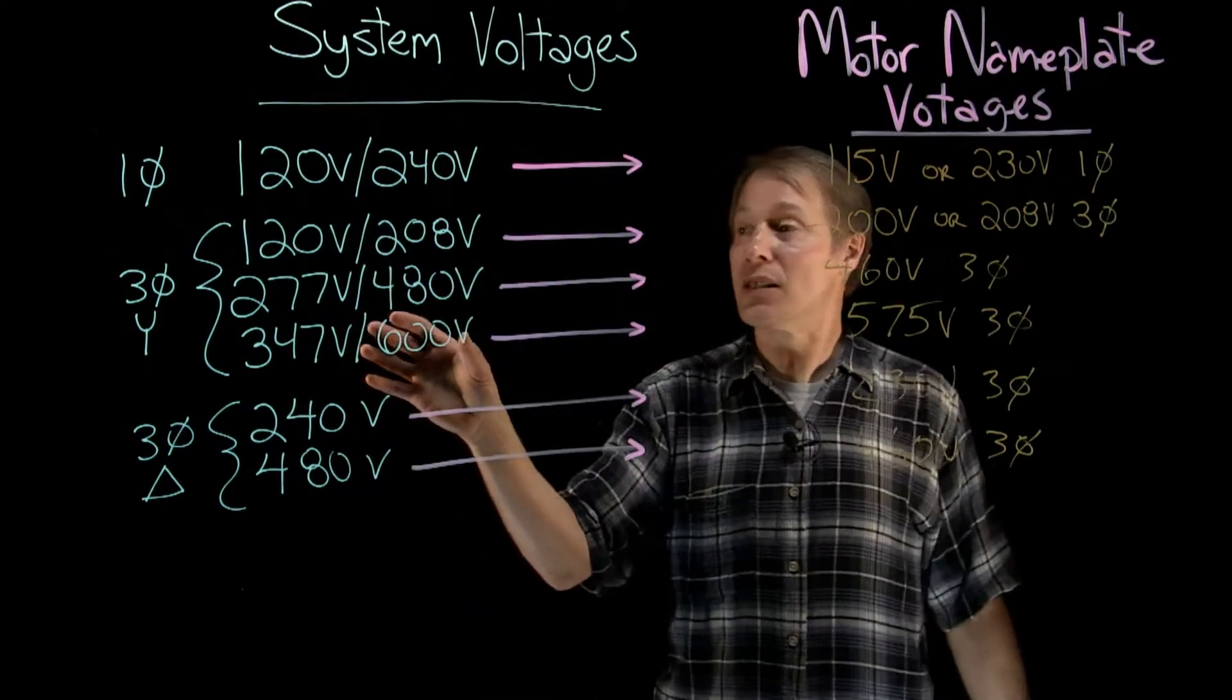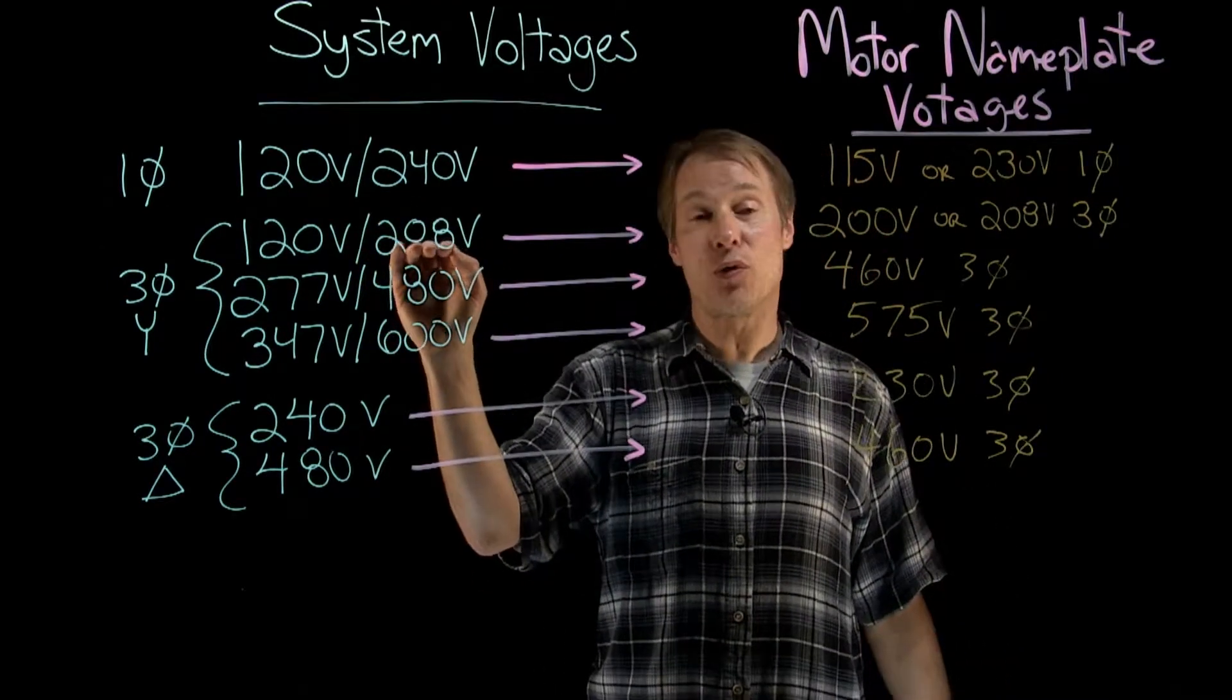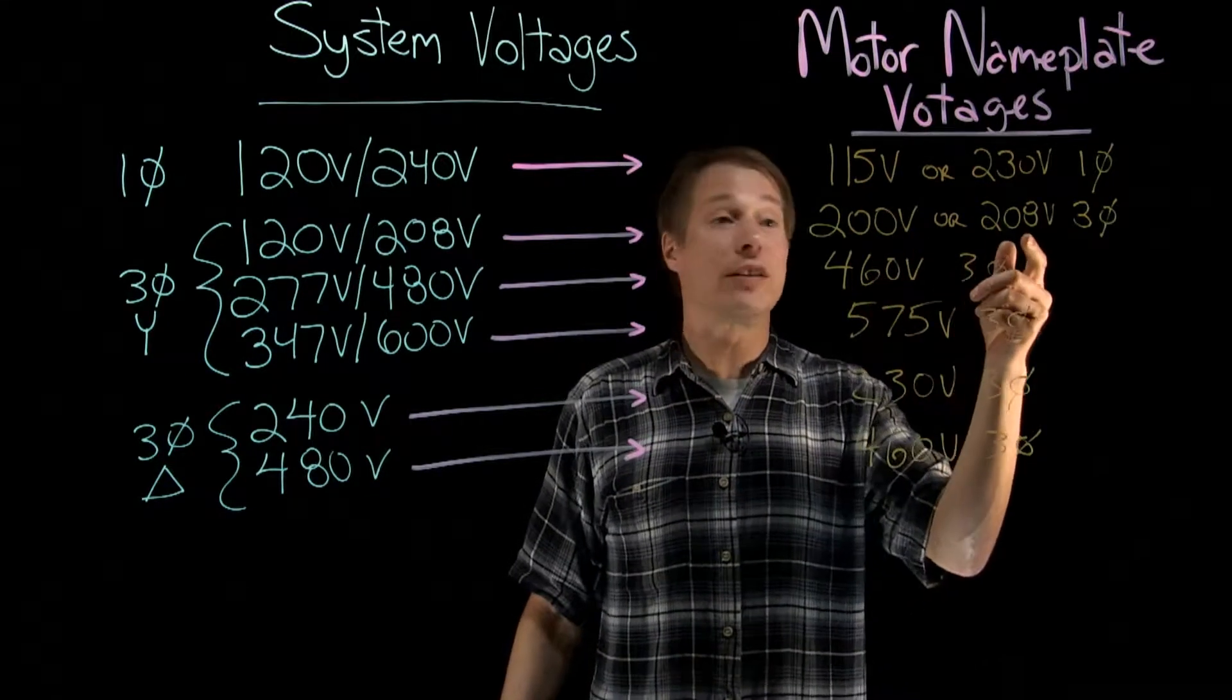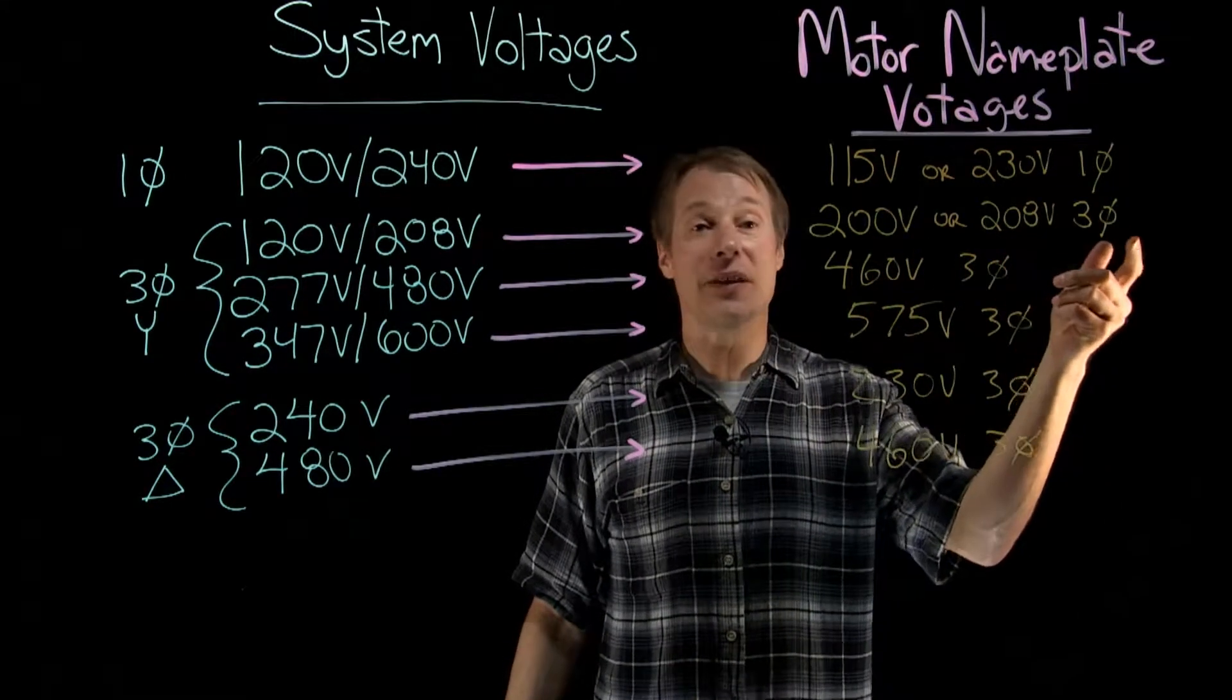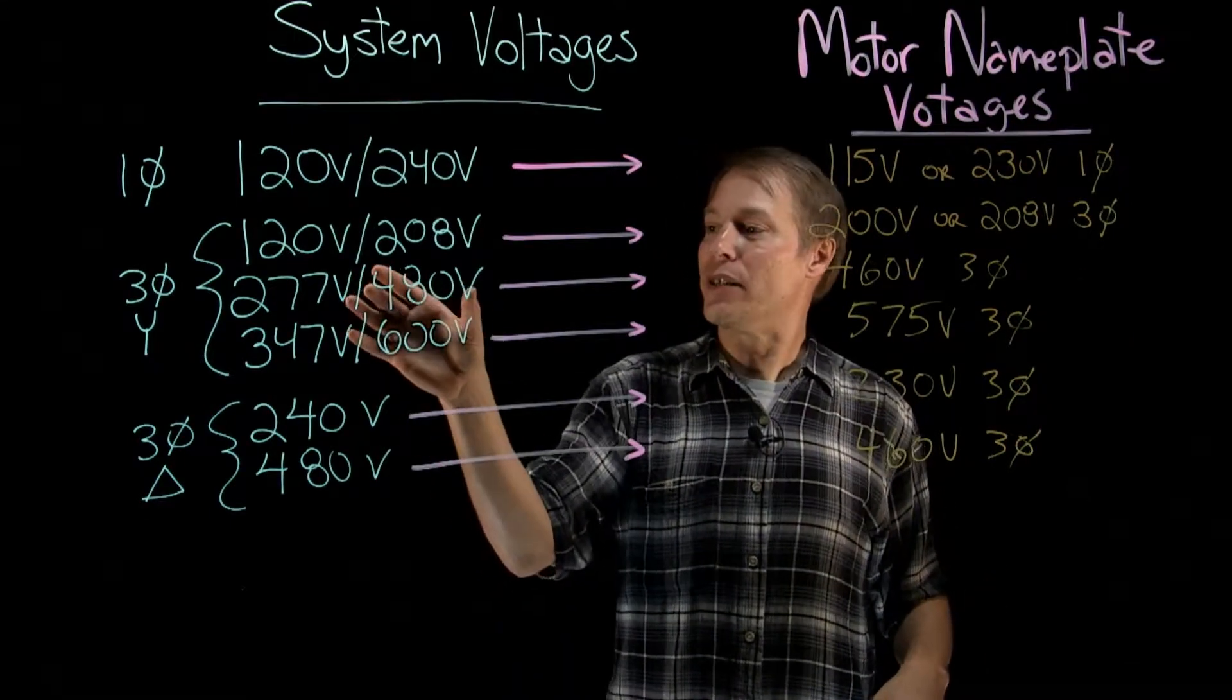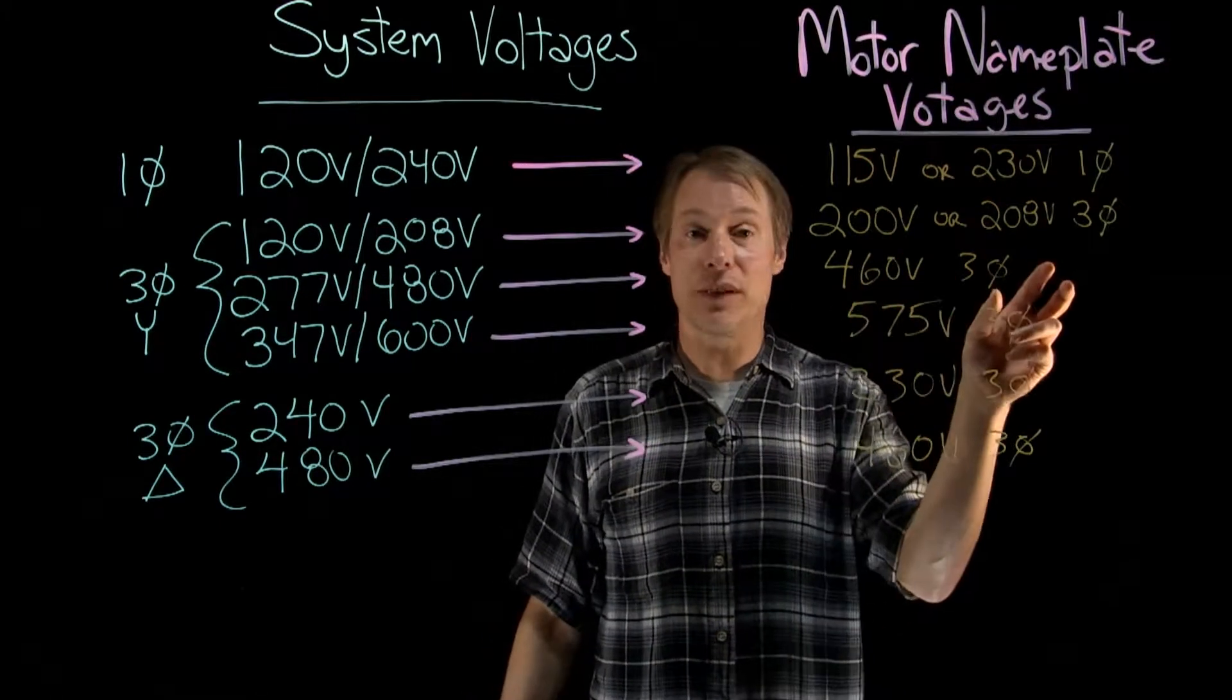Moving on to the commercial application, we're looking at these numbers here. So for a 208V system, we're looking at a 200V motor or a 208V rated three phase motor. The rest, you can probably see what's going on here. So for a 480V system, we're looking at a 460V three phase motor. For the 600V three phase, we're looking at a 575V three phase motor.